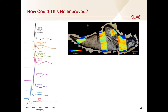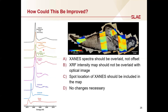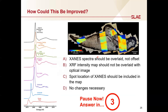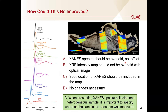Our final example: here we have an optical image of a sample, and the X-ray fluorescence maps are overlaid on top of this image. The XANES is shown in the figure on the left. The answer is C — the spot location where the XANES was collected should be shown on the image. For the most part, this image is very good, and the style of overlaying the fluorescence map on top of the optical image is a nice way to display the data. However, when you have a heterogeneous sample like this, it's important to specify where on the sample the XANES spectra were collected, since the XANES will clearly be different from one point to another.